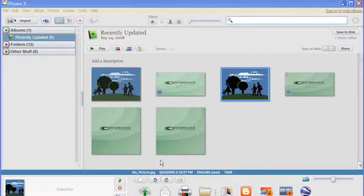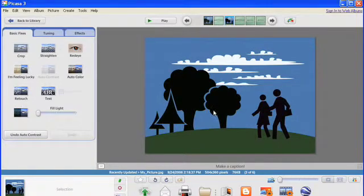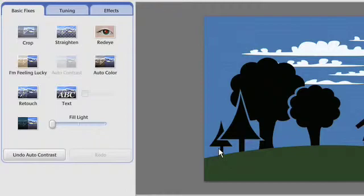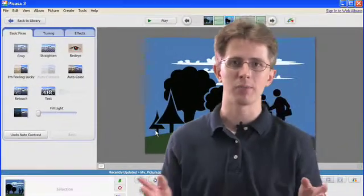Once you're ready to edit an image, go ahead and double click on that image and it'll bring it into the main stage viewer. Within Picasa, if you look up to your left, you're going to find options such as cropping, straightening, red eye reduction, contrast, color, and lots more.